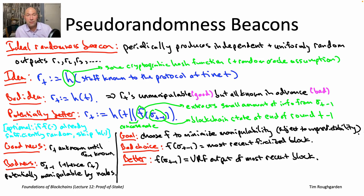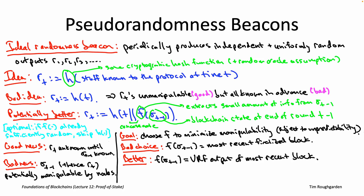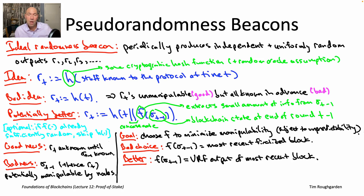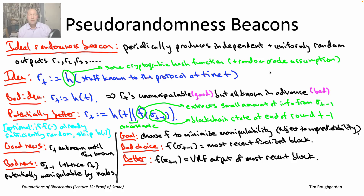Why is this choice so much better? Fundamentally, it gives much fewer degrees of freedom for a node to manipulate the output of f. Think about the node chosen to propose a block in round t-1. With our first idea — where f depended on the transactions in the block — they had zillions of different possible outputs of f to choose from. Now, with this definition of f, it actually seems like they have no degrees of freedom at all: f is defined to be literally independent of what they put in the block, caring only about the VRF output of that node. That VRF output depends on the pseudo-random seed for that time step (the VRF input) and the private key used to evaluate the VRF.